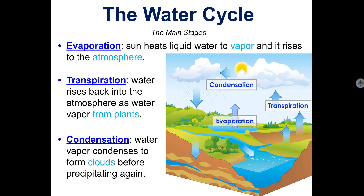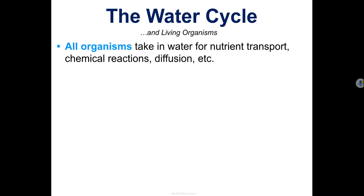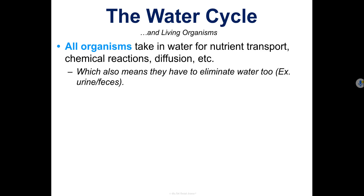Now we've talked about all six steps of the water cycle. Keep in mind that all organisms take in water for nutrient transport, chemical reactions, and diffusion, and this means they have to eliminate water too. They can't just take in water and never get rid of any. For us, we release it in the form of urine and feces.